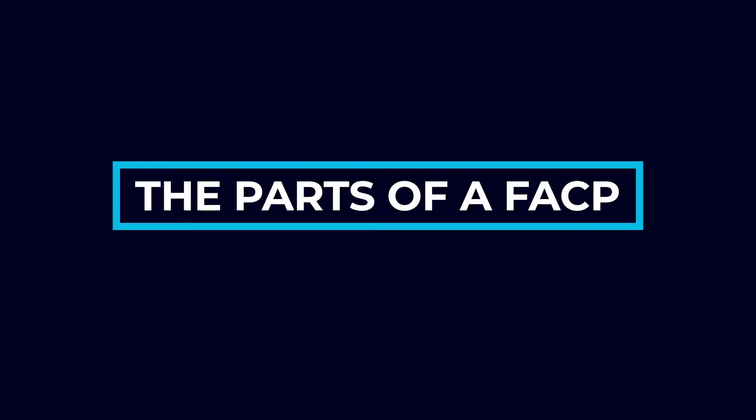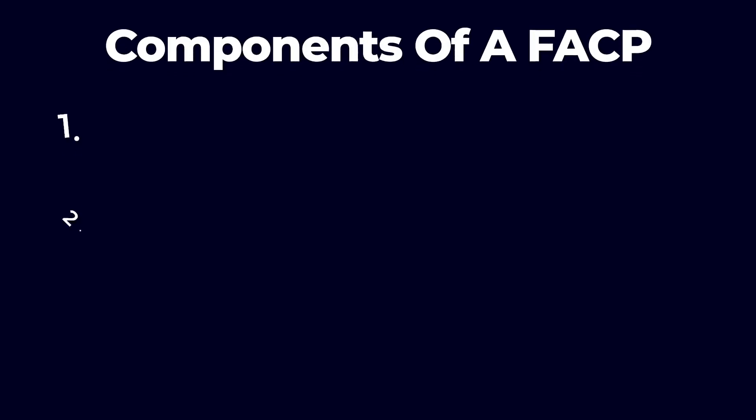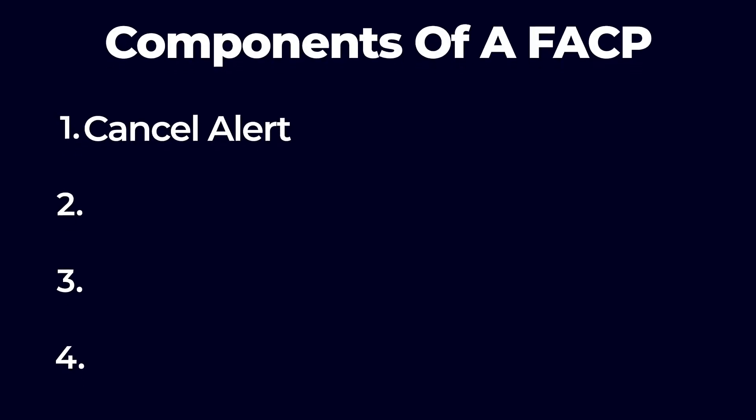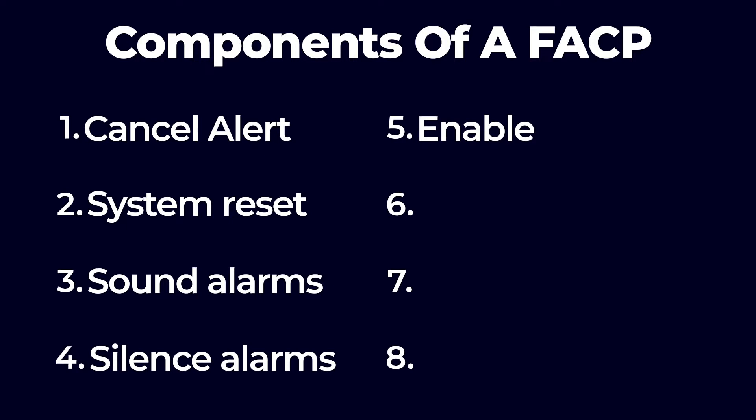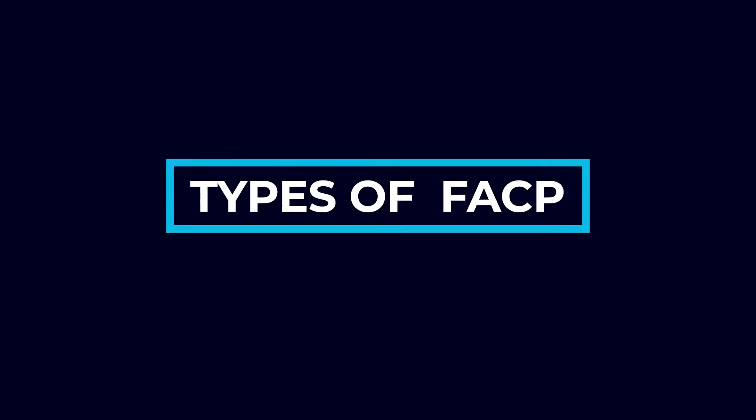Let's review the parts of a fire alarm control panel. Of course, each panel will be slightly different, but in general you'll find these components: cancel alert, system reset, sound alarms, silence alarms, enable, disable, test, and acknowledge. There will also be an area where you can see the status of each component in the system. This might be via a digital screen or labeled indicator lights. The way they are labeled will depend on what type of system you have.